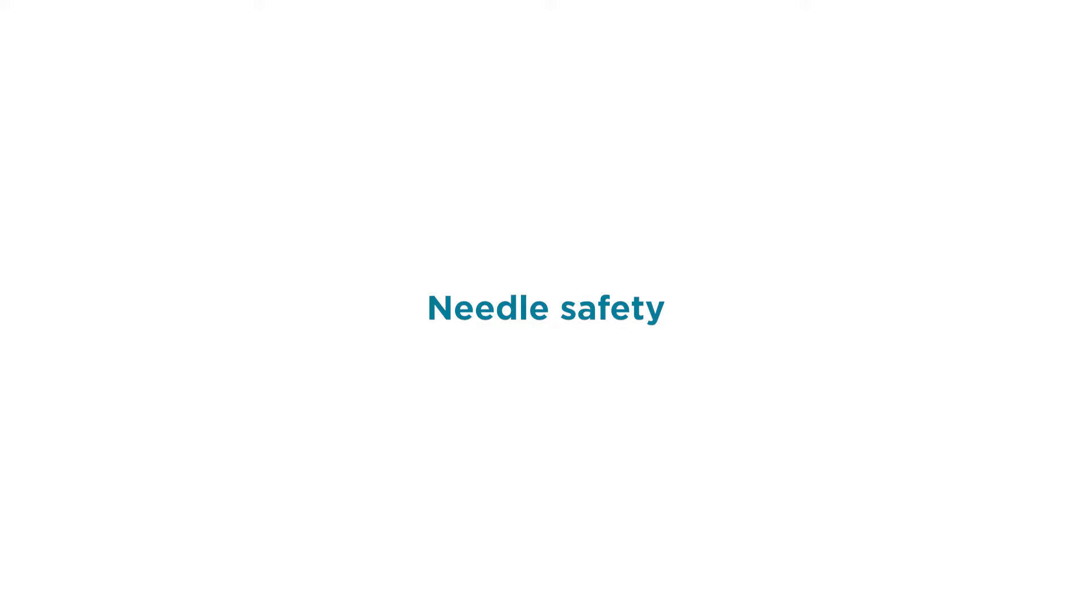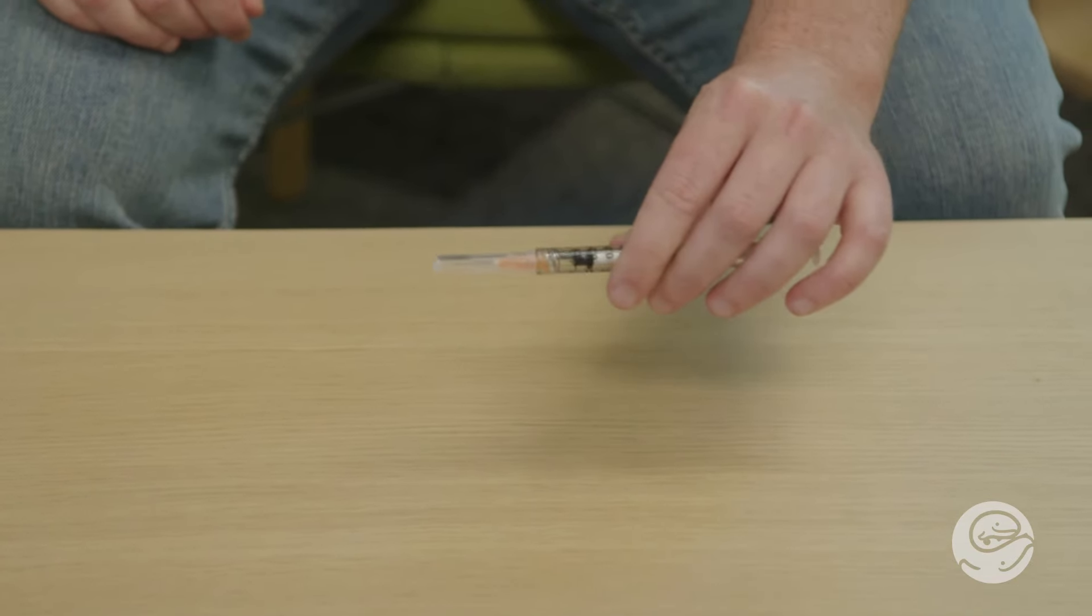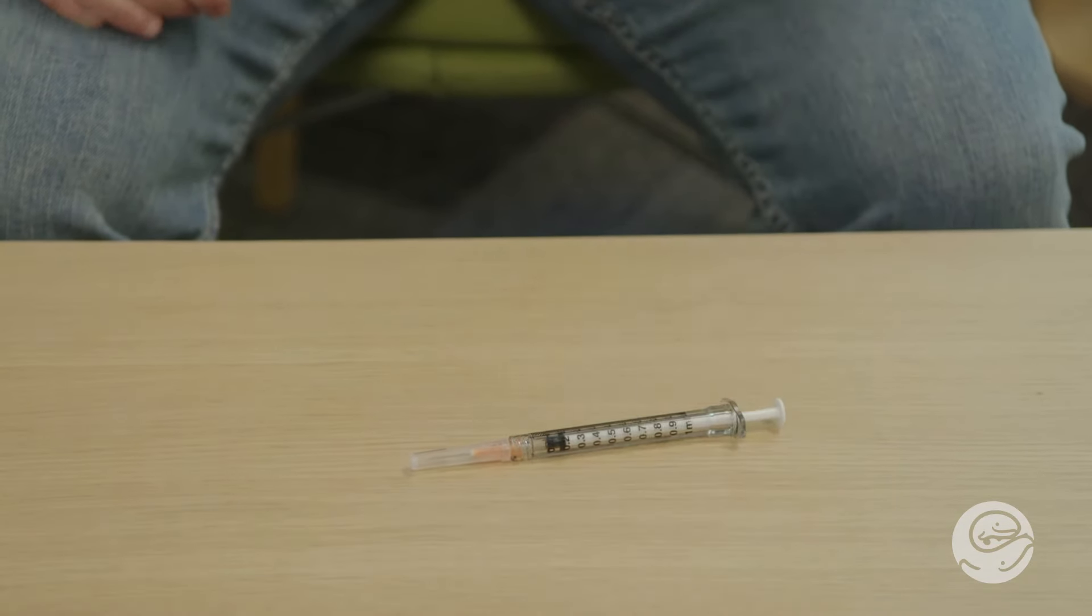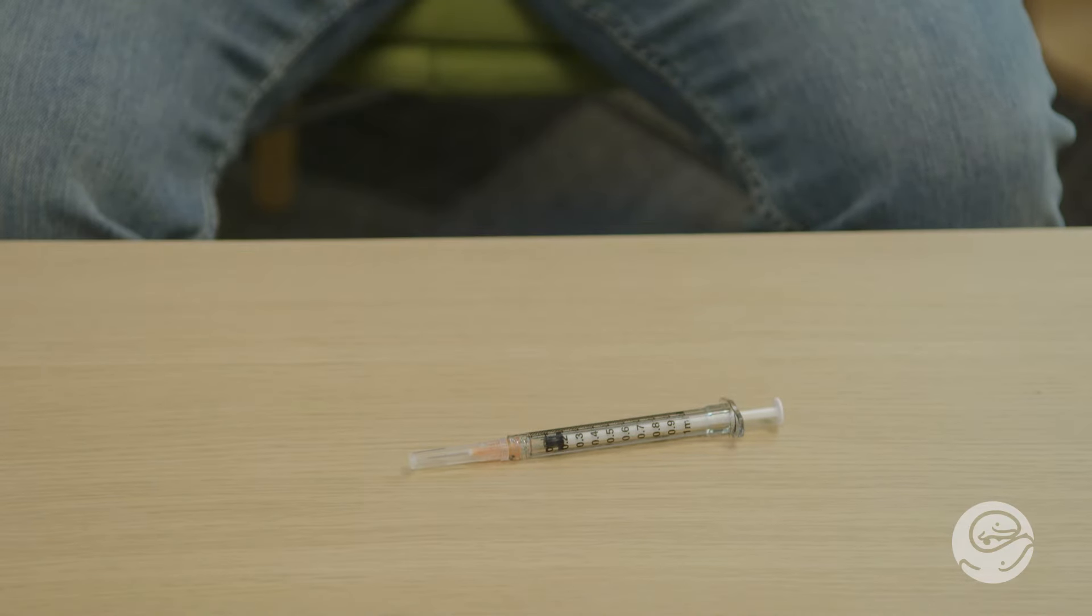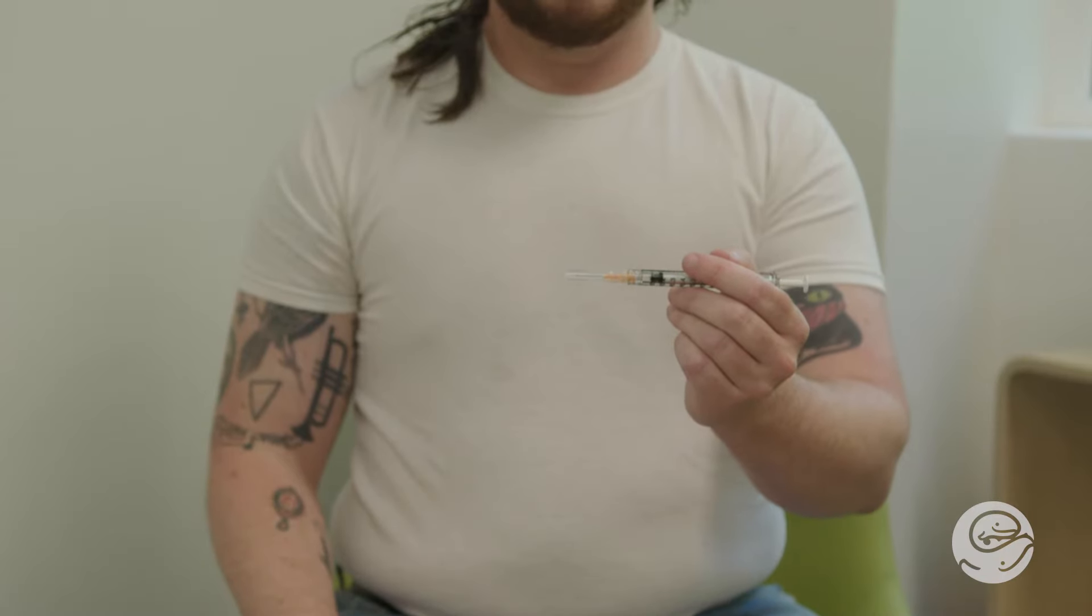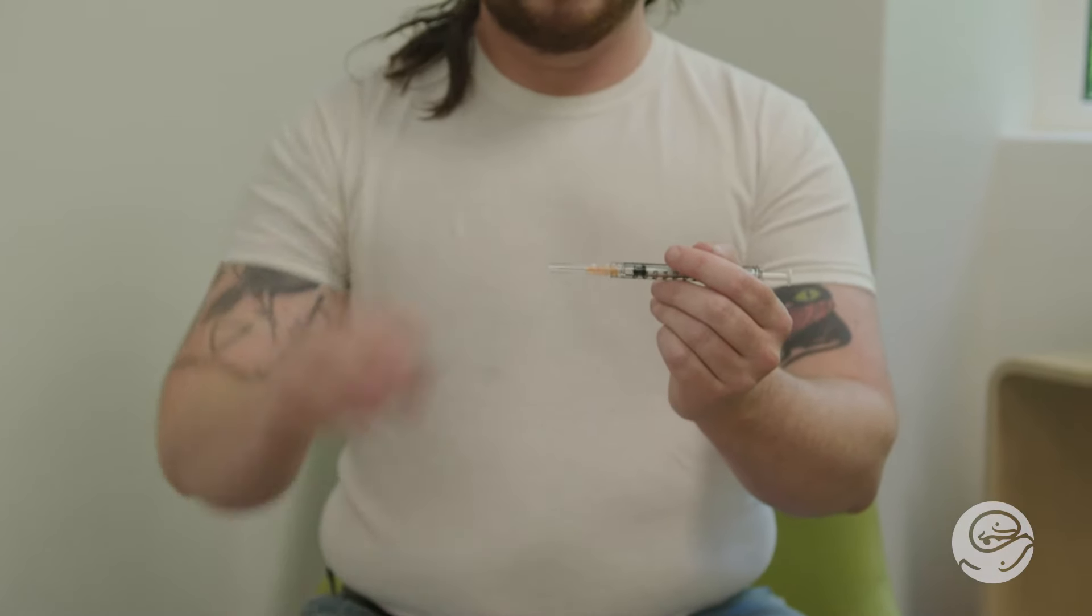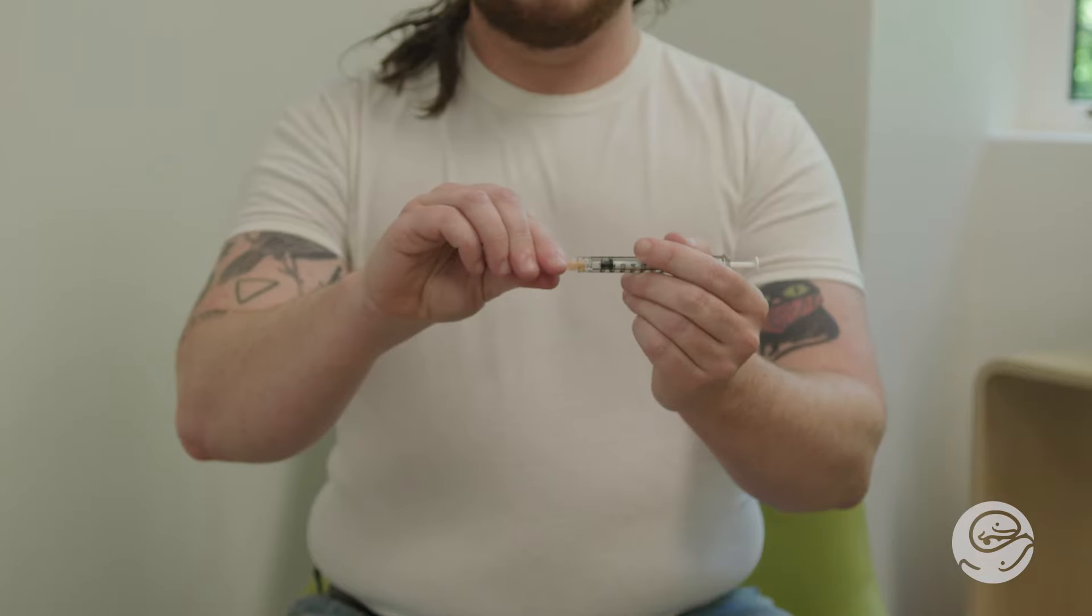Needle safety. The easiest way to not poke yourself accidentally is to keep the cap on the needle as much as possible and uncap and recap in safe ways. Use the rainbow method for sharp safety when taking the cap off of the needle. Hold your syringe like a pencil horizontally in front of you with one hand and hold the cap near the end of the cap and pull out in an arc like a rainbow.